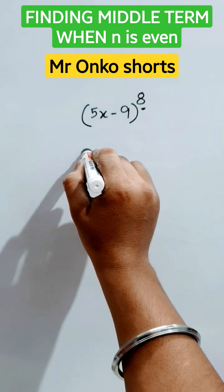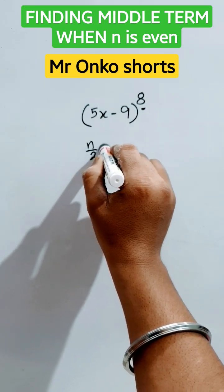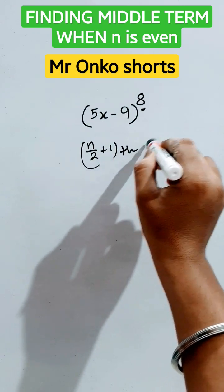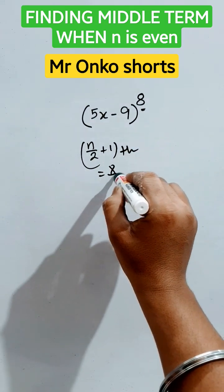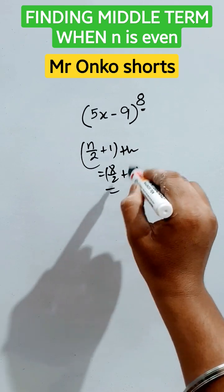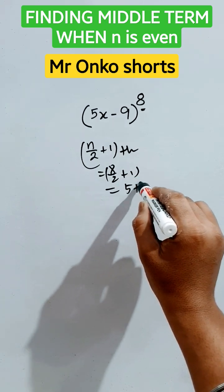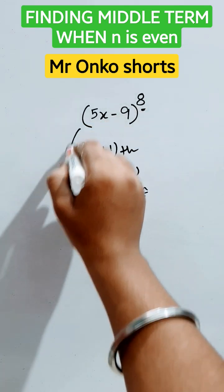to utilize the formula that is n/2 + 1 th term will be the middle term. That is 8/2 + 1, which is 4 + 1, so the 5th term is the middle term. Now how to find that?